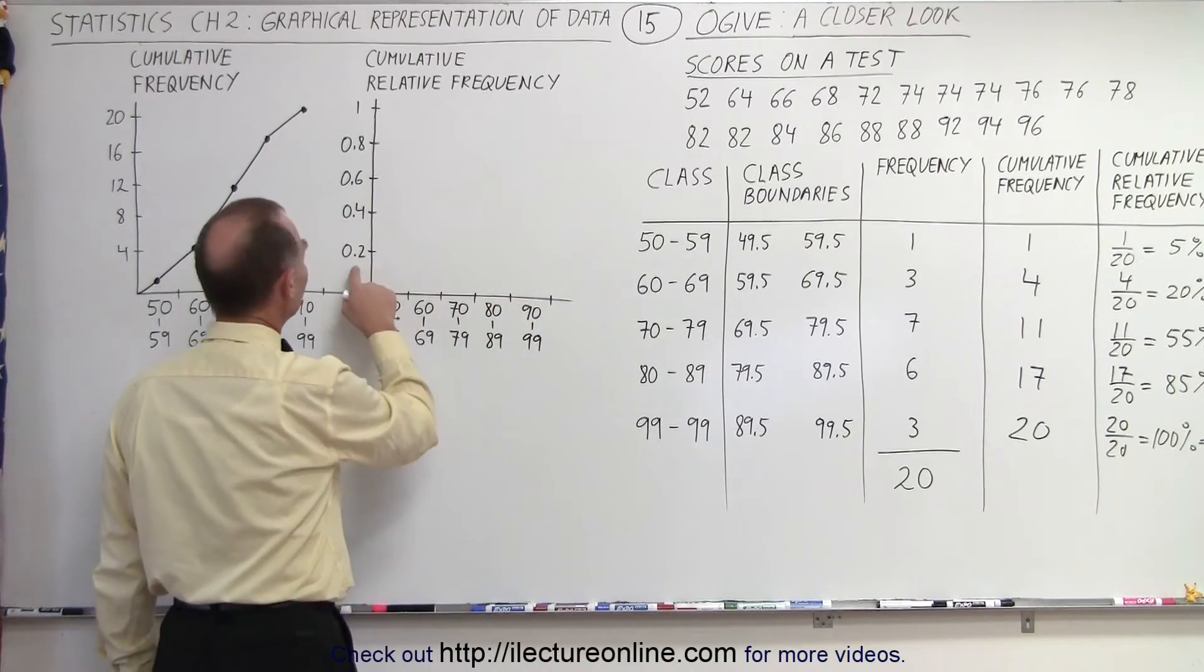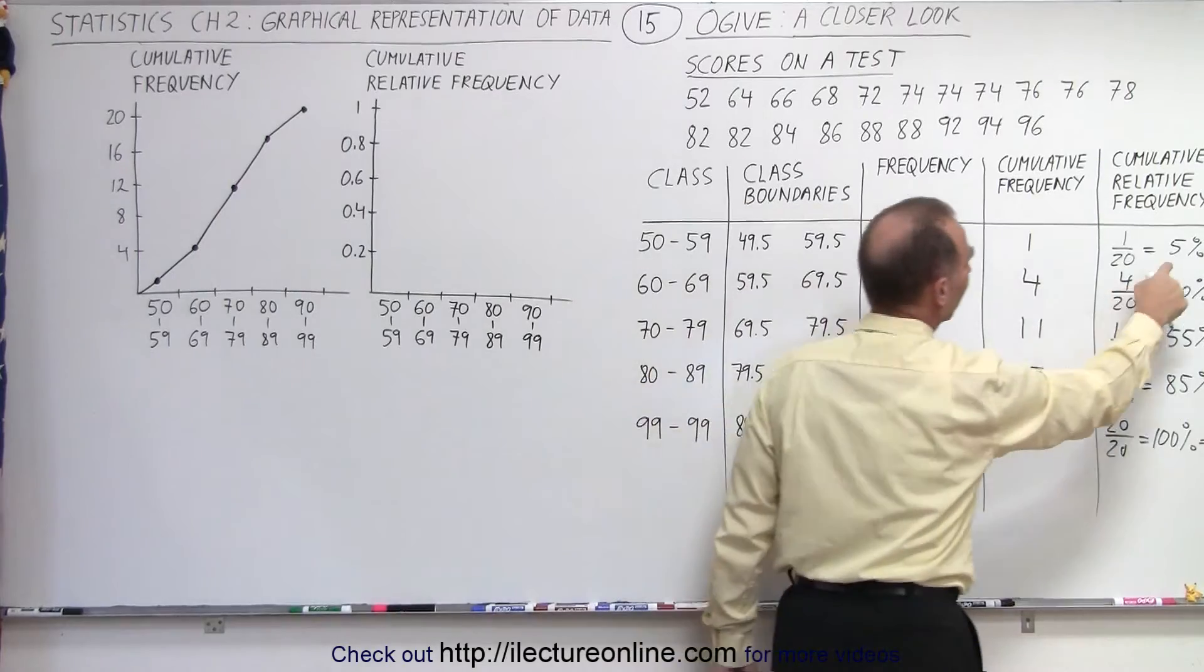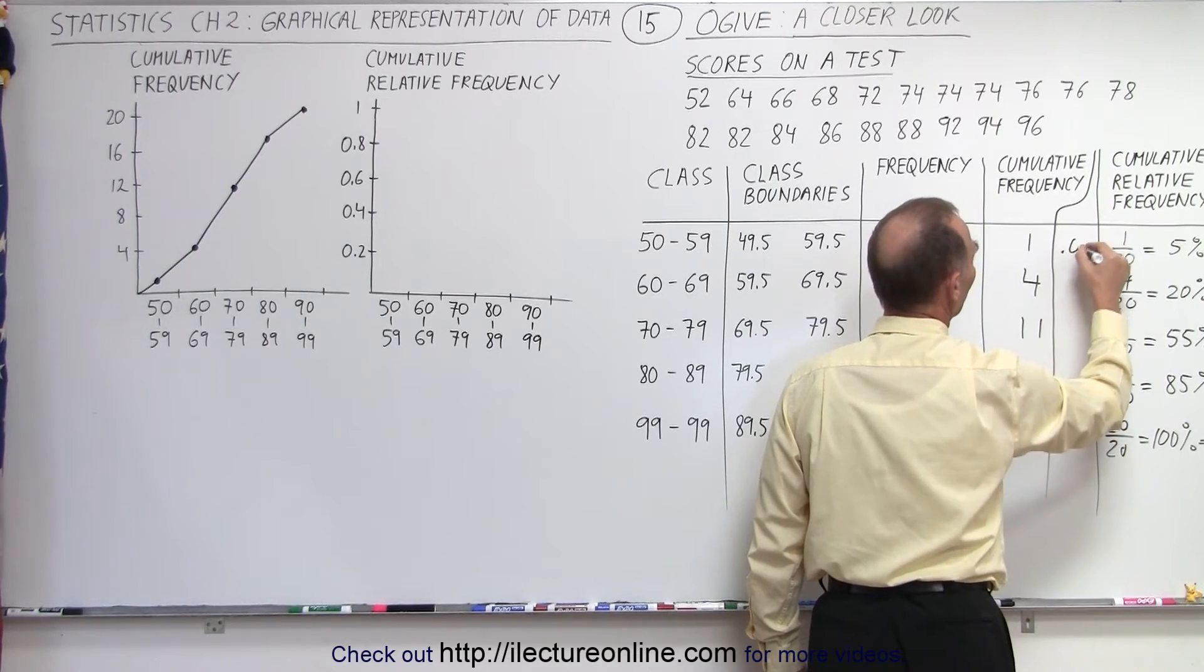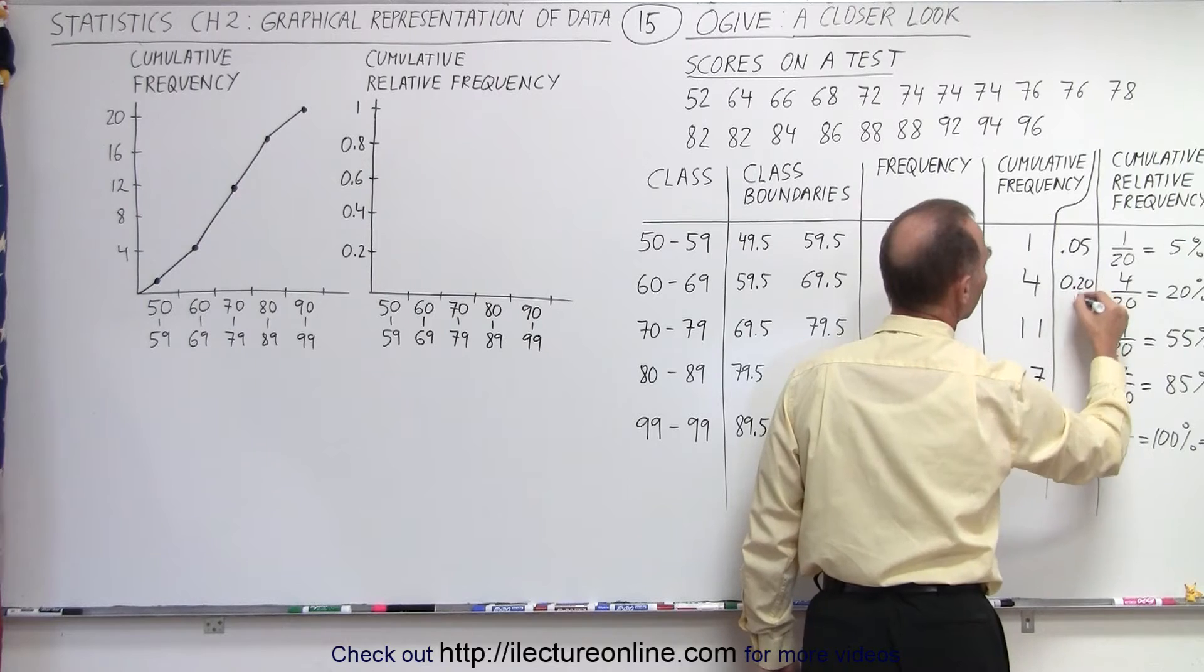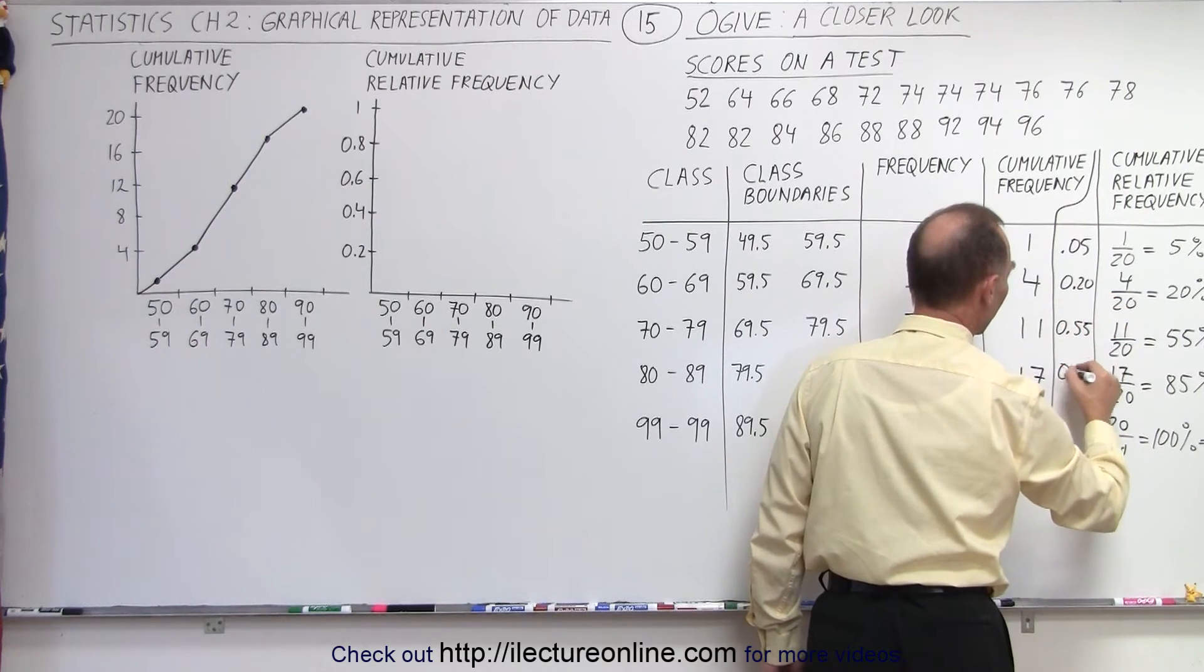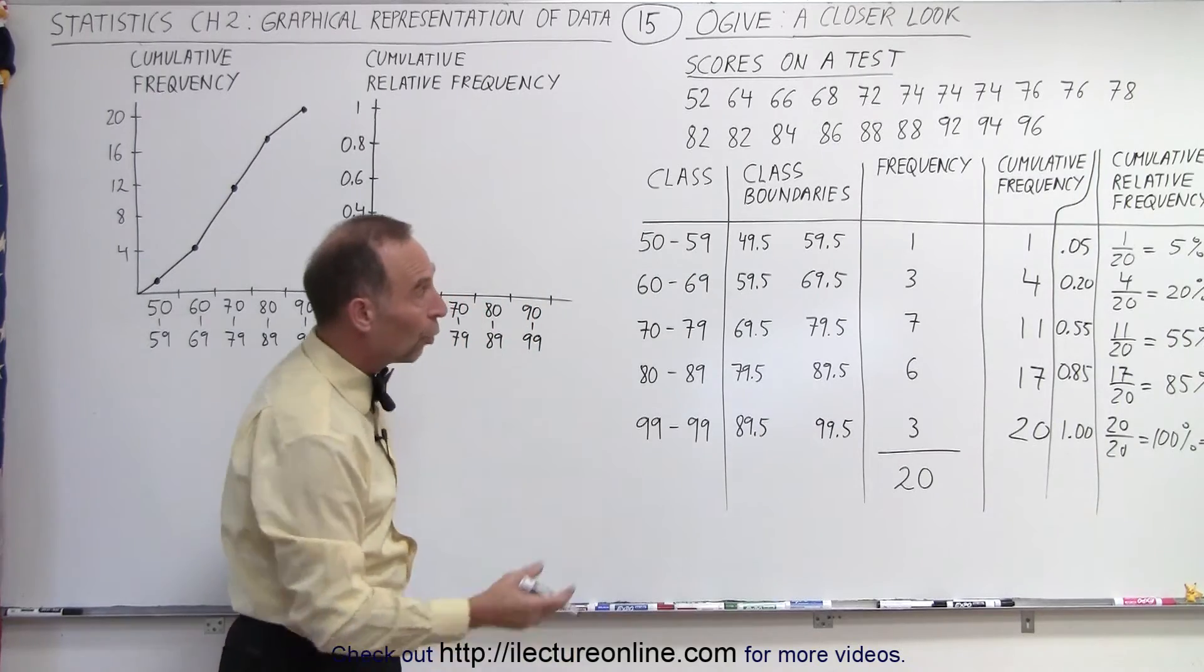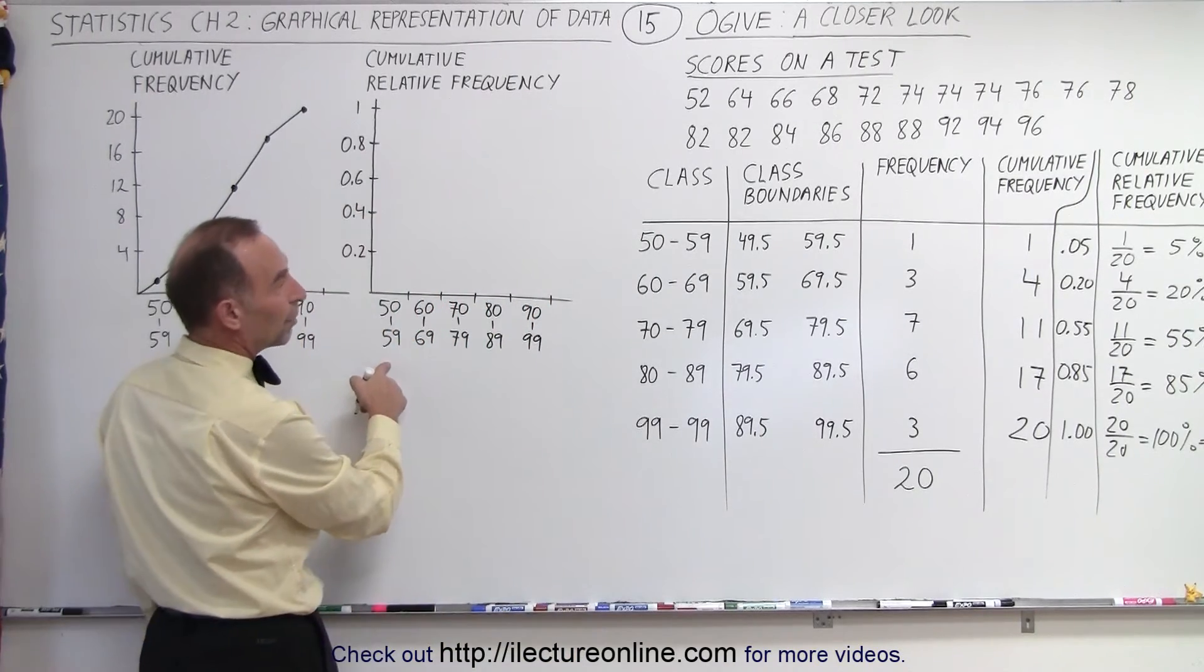So now we're going to graph this. And notice here that I have it in terms of a fraction. So as a fraction, let's go ahead and add another column right here, because I want to write this number in terms of a fraction. That would be 0.05. This would be 0.20. This would be 0.55. This would be 0.85. And that would be 1.00, or simply 1. So you can see that. You could represent it as a percentage, or you could represent it as a fraction of 1.